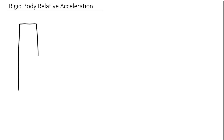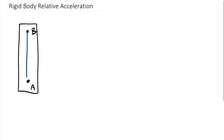Just a rectangular rigid body here. Let's put a point down here on this end — we'll call this A — and a point up here, call this B. We connect these with a position vector. In this case we're going to go A relative to B, so this would be my R of A relative to B.